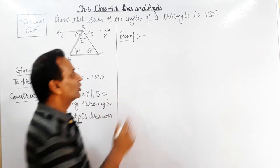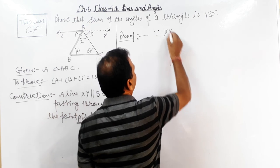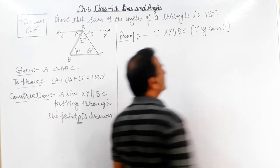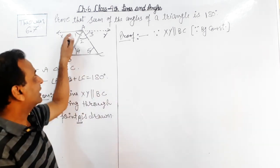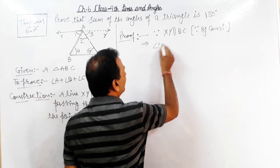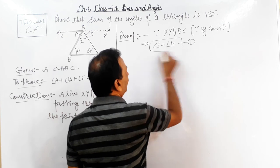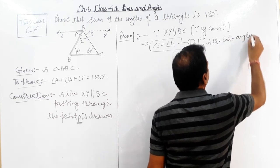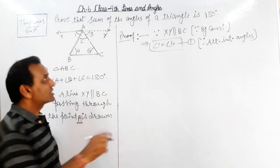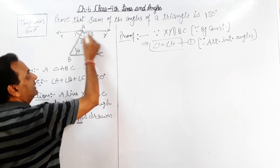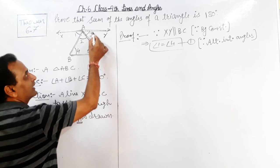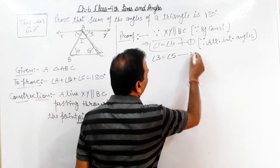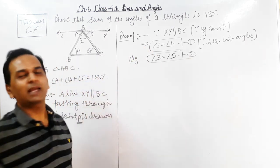Because XY is parallel to BC by construction, this implies angle 1 equals angle 4 — result number 1 — because they are alternate interior angles। Similarly, right side में भी Z type की shape बनती है, so angle 3 equals angle 5 — result number 2 — alternate interior angles।